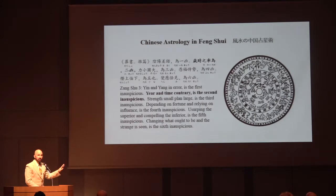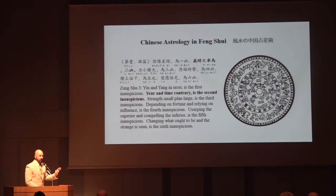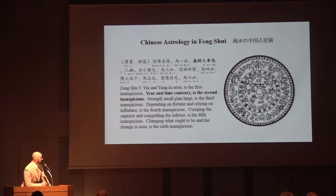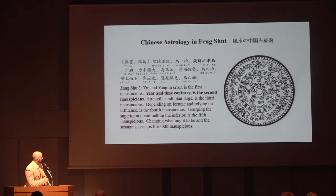There are also three auspicious points. The first is about having a building ritual with correct timing. The second is about having auspicious soil. The third, which I really like, is just about having good skill — if you don't have good skill, it's very inauspicious. With reference to the second inauspicious — 'year and time contrary' — we can assume that Gokun was talking about date selection.